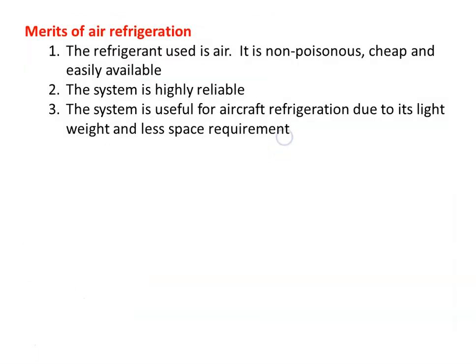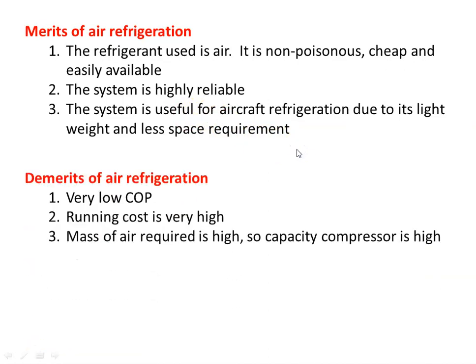The advantages of air refrigeration: the refrigerant used is air — non-poisonous, cheap, and easily available; the system is highly reliable; and it is useful for aircraft refrigeration due to its light weight and small space. The demerits are very low COP and high running cost, because bigger equipment is required — bigger capacity compressor and evaporator. This system is used only for aircraft refrigeration, not for commercial or industrial refrigeration.